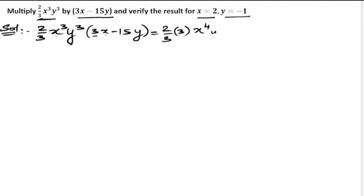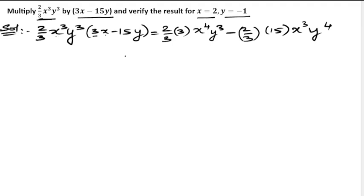Next, we have y³. For the second term: 2/3 × 15, with variables x³y³ × y giving y to the power of 4. We can cancel the 3s: 3 × 5 = 15, and 2 × 5 = 10. So the result is 2x⁴y³ − 10x³y⁴.